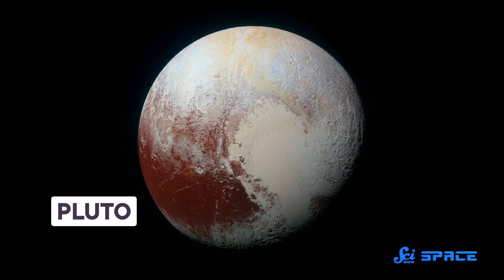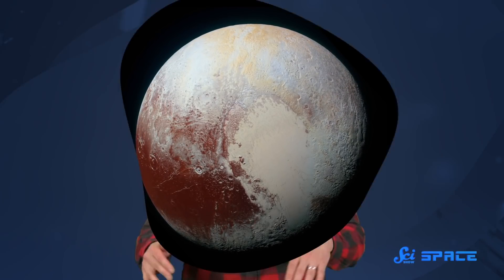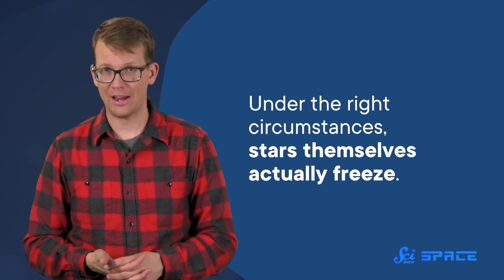If I ask you to imagine something frozen in space, you might think of distant objects like comets or Pluto, objects that are far, far away from a star. But an object doesn't have to be at the fringes of its system, far away from any star, to freeze. Under the right circumstances, stars themselves actually freeze. In fact, in several billion years, even our own Sun will become a frozen crystal sphere.